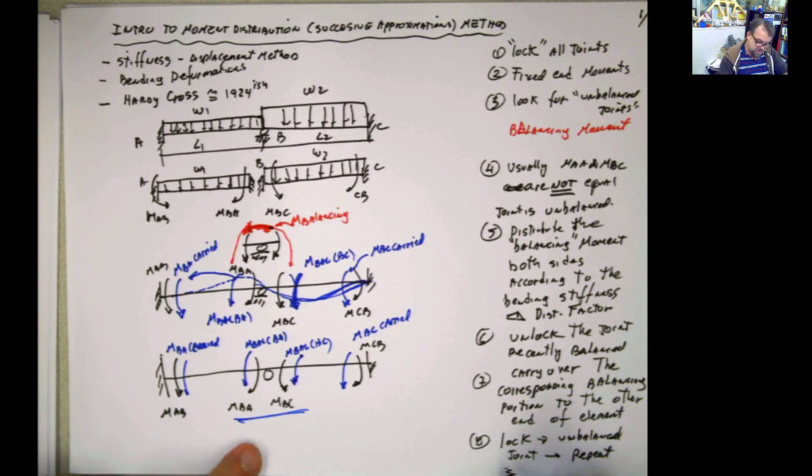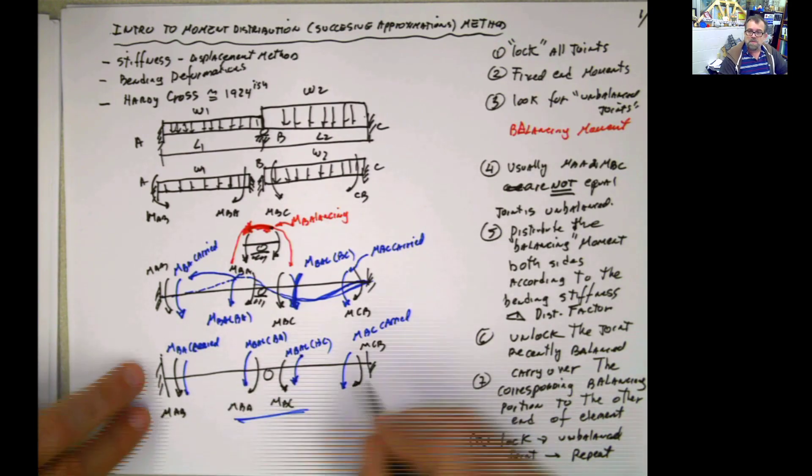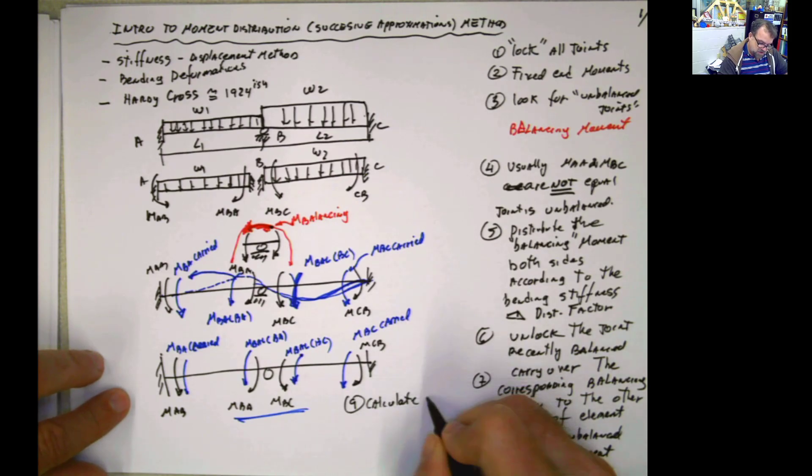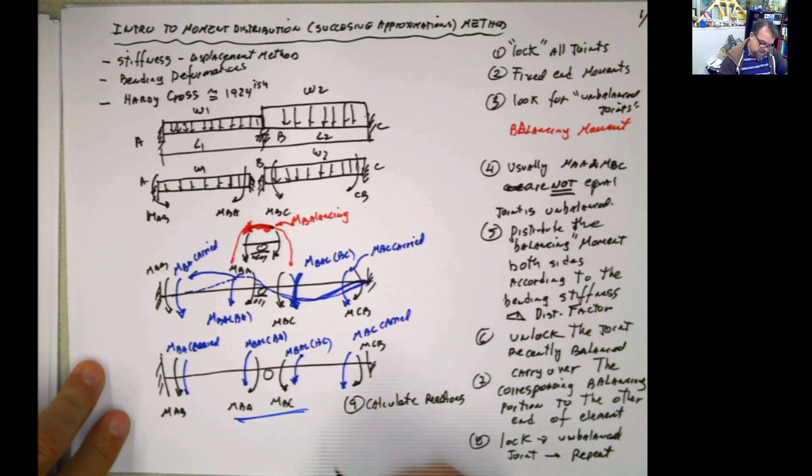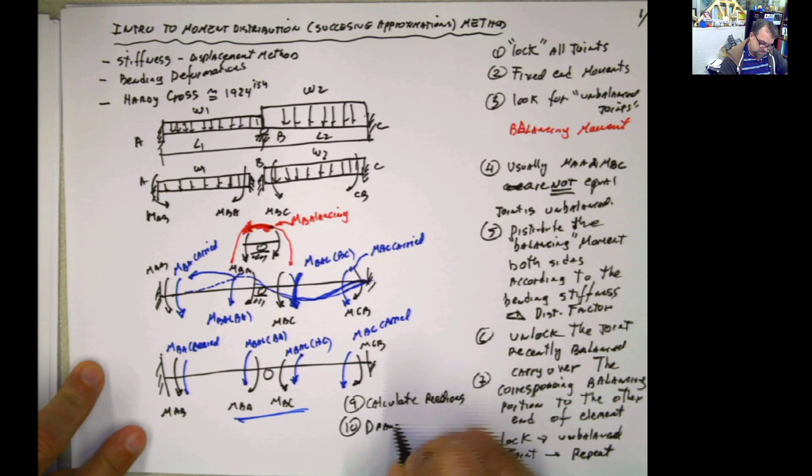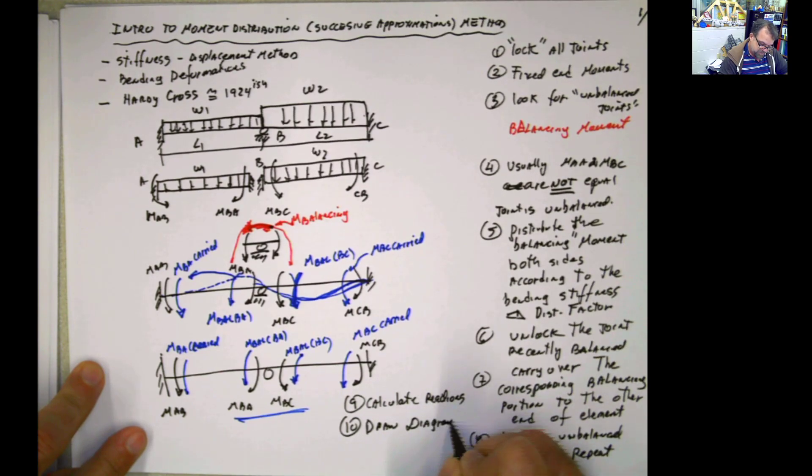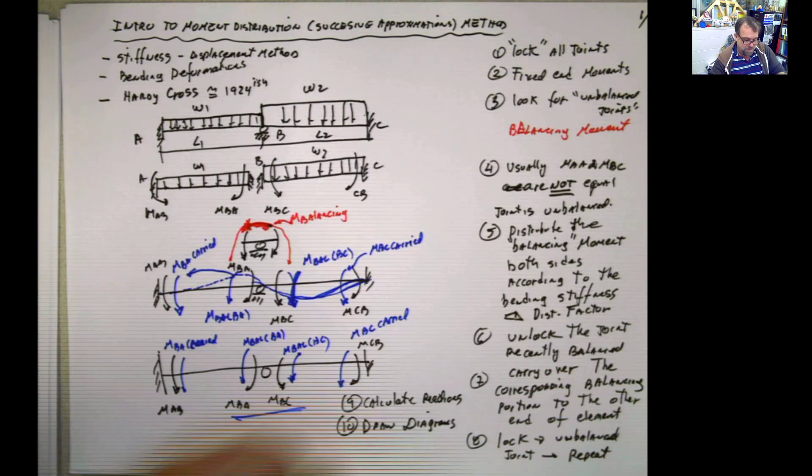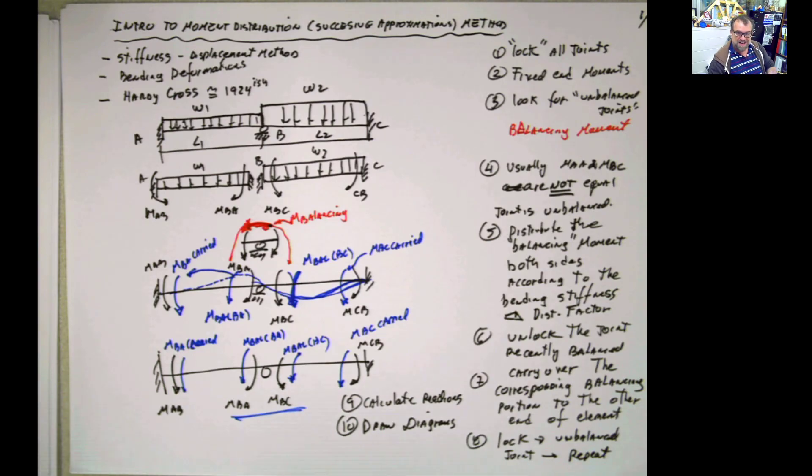At the end, you're going to have the end moments at the structure. And then if you want to continue, then you can calculate extra reactions. And then draw the diagrams, if you need to draw the diagrams, and use that information in any way that you want to. So this is a very quick picture of how the method works. Now, in the next video, I'm going to show you some assumptions and some formulas that you need to and how to calculate the values that we have to calculate. So keep watching the next video. This is just a very brief introduction of how the method works. See you guys. Have a good day.